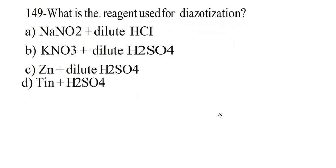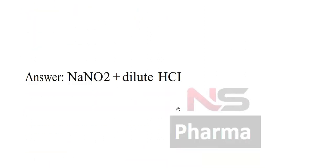Next question. What is the reagent used for diazotization? Option A NaNO2 plus dilute HCl, Option B KNO3 plus dilute H2SO4, Option C Zinc plus dilute H2SO4, Option D Tin plus H2SO4. Answer: NaNO2 plus dilute HCl.